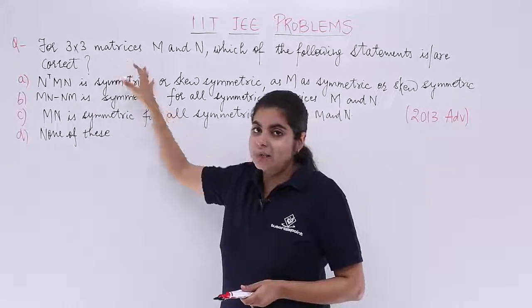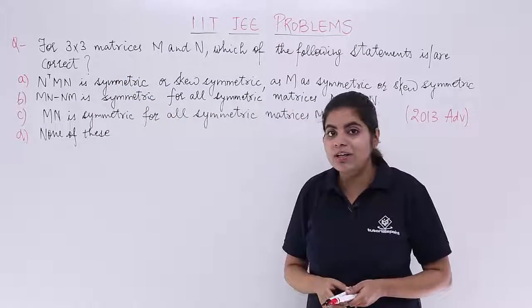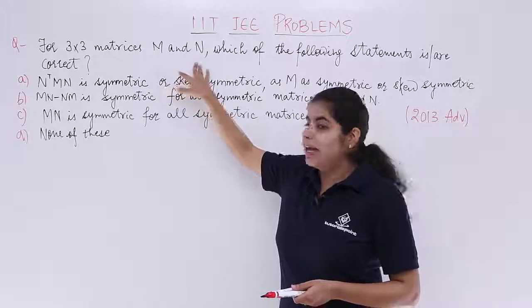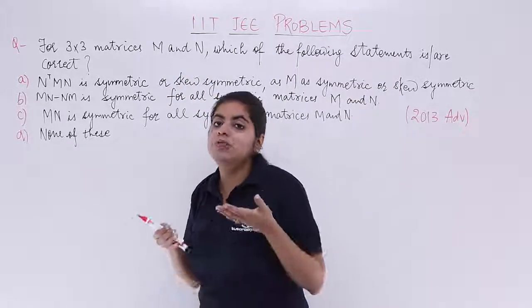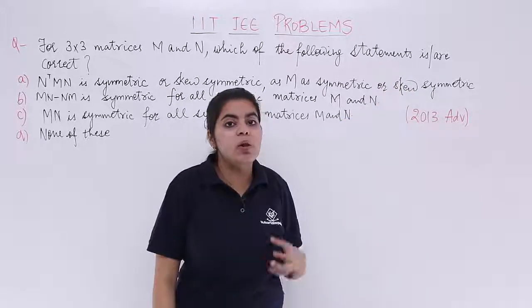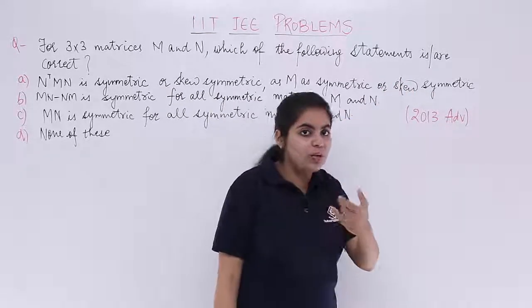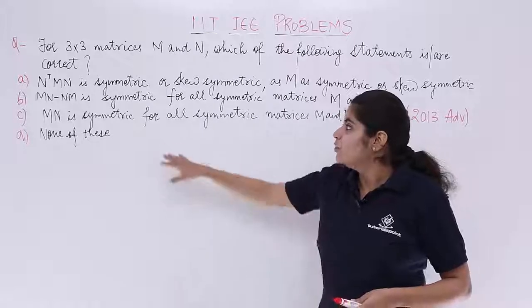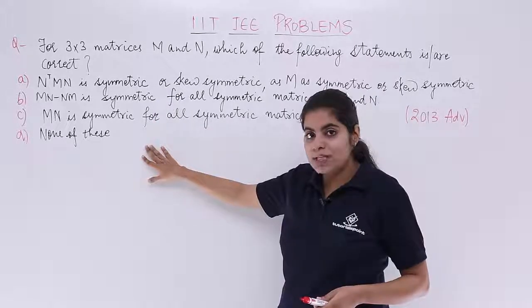For 3x3 matrices, that means we have square matrices of the order 3. They are M and N which is given to me. Which of the following options is or are correct? You have to tell which option one or more is correct. We have four options given to us.